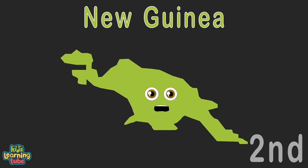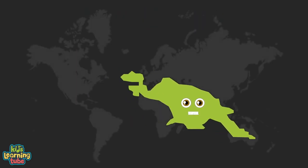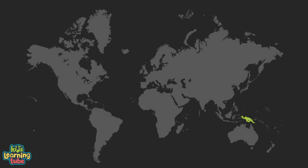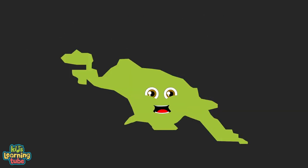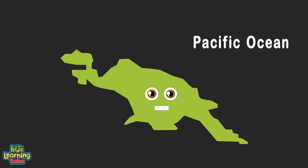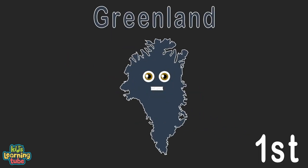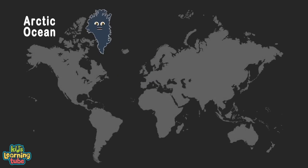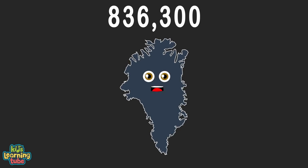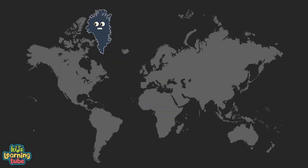I am New Guinea, the world's second largest island, located within Oceania. I touch the Pacific Ocean with 303,476 square miles. I am Greenland, the largest island on earth, located between the Arctic and Atlantic Ocean. With 836,300 square miles, just east of northern Canada is where I call home.